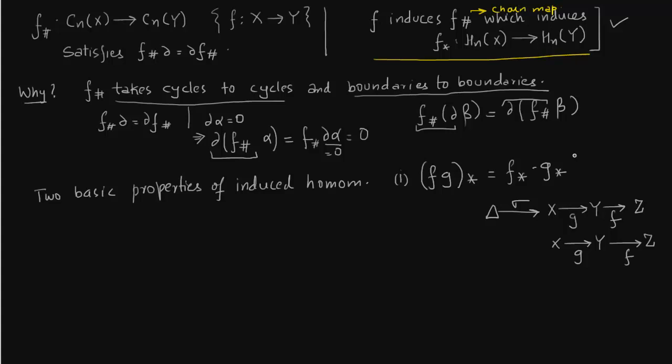Where does f star come from? f star comes from f hash, which is the entire composition: from delta you go to X, you go to Y, then you go to Z, which gives you a map from delta to Z, which is f hash. Similarly, g hash is from delta to Y. You start with f, then with g, which gives you f hash and g hash, which in turn give you f star times g star. So f g star is a map from homology group of X to homology group of Z.